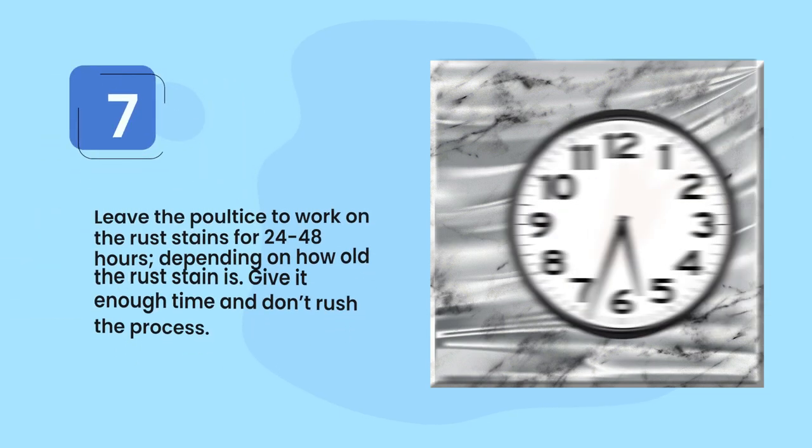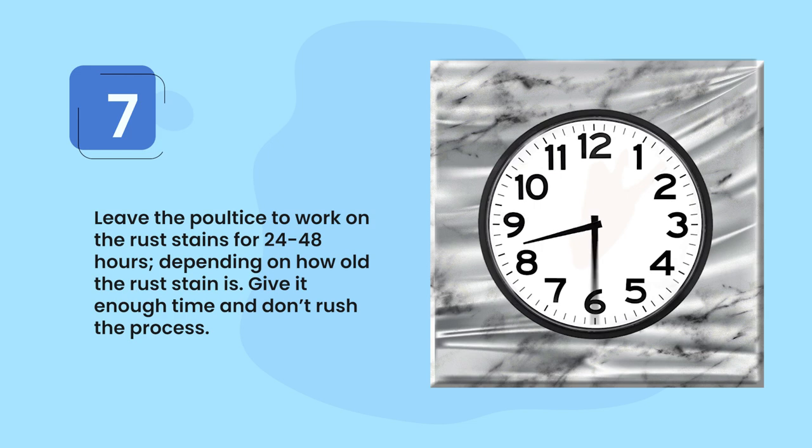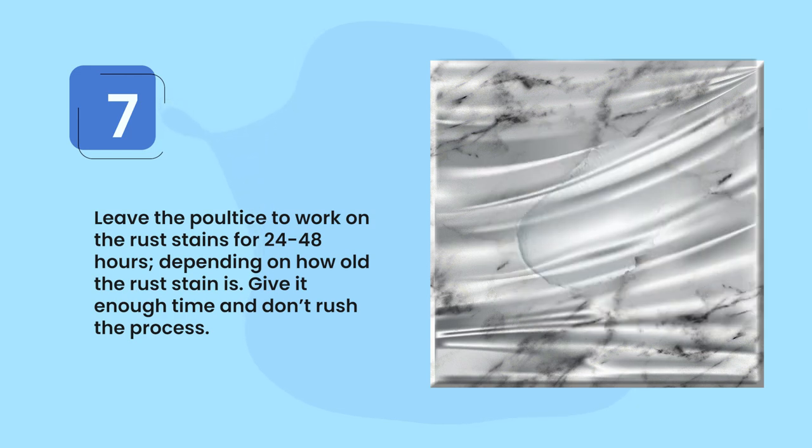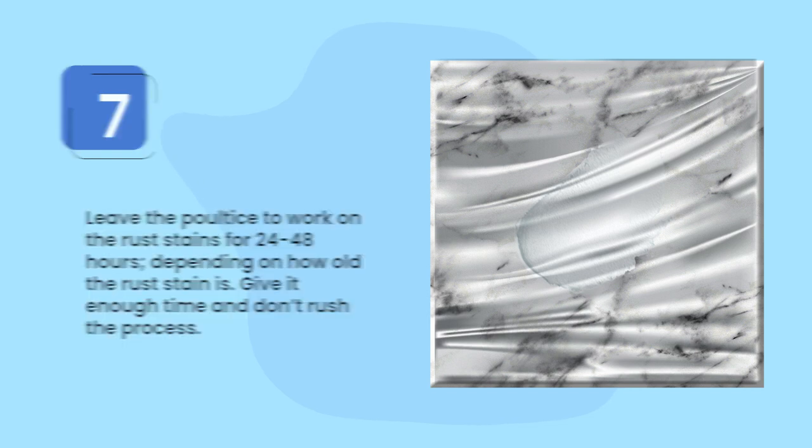Step seven: leave the poultice to work on the rust stains for 24 to 48 hours, depending on how old the rust stain is. Give it enough time and don't rush the process.